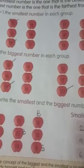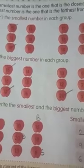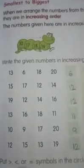The smallest number is the one that is closest to zero, and the biggest number is the one that is farthest from zero. So today's topic is smallest to biggest.